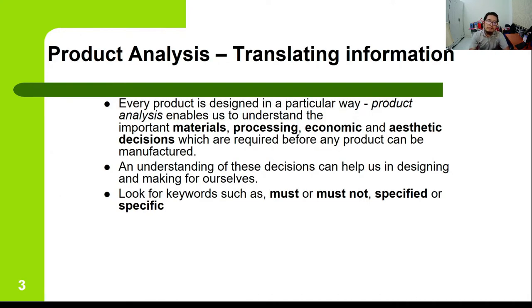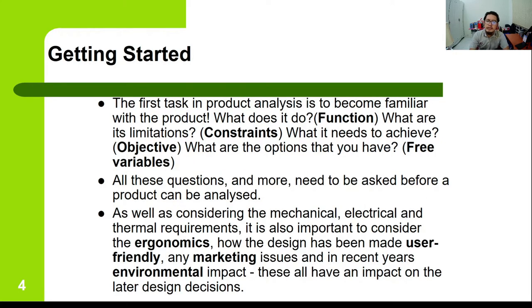Translating information means first we need to understand the particular product. A certain product is designed in a particular way, so we need to understand what the important material processing, economic, and aesthetic decisions are. We have to look for keywords such as 'must' or 'must not,' 'specified' or 'specific,' to make sure we do not miss out on important constraints or free variables. First we have to analyze the product.